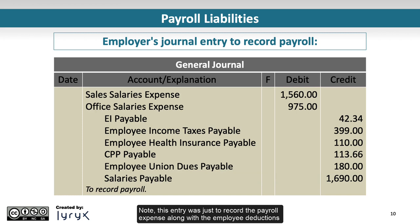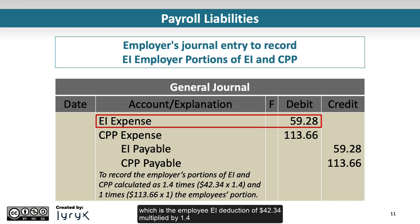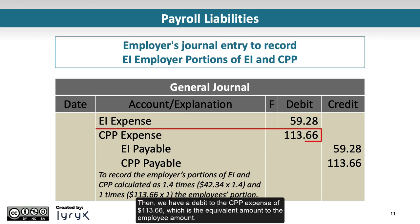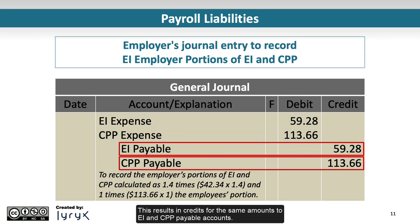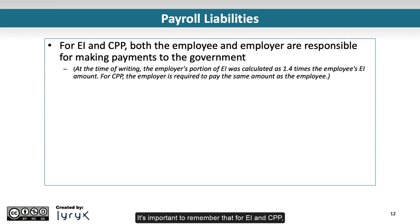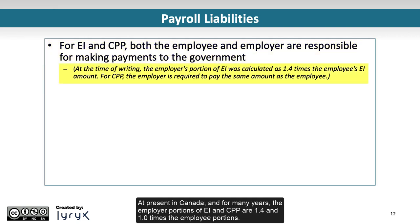Note: this entry records the payroll expense along with employee deductions but does not include additional employer expenses related to payroll, such as the employer portions of EI and CPP. This results in a journal entry that includes a debit to EI expense of $59.28, which is the employee EI deduction of $42.34 multiplied by 1.4, representing the amount the employer must contribute. There is also a debit to CPP expense of $113.66, which is the equivalent amount to the employee contribution. In Canada, the employer contributes the same to the CPP program as the employee does. The employer portions of EI and CPP are 1.4 and 1.0 times the employee portions, respectively.